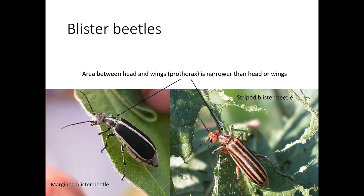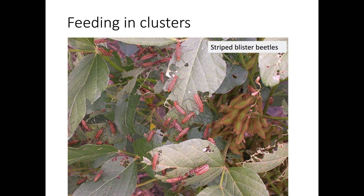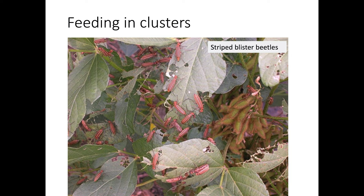You don't want to handle blister beetles if you catch some in your net, as they secrete a toxin from their legs that can burn or blister your skin. Adults are soft-bodied beetles approximately three-quarters of an inch long. The striped blister beetle has alternating dark brown and yellowish-orange stripes along the length of the body. The margined blister beetle is black with a gray border along the margins of its wing covers. The prothorax — the area between the head and the wings — is narrower than the head and wings. Adults of both species feed in clusters and skeletonize soybean leaves, making large irregular holes between the leaf veins. Feeding is typically localized to a few small areas of the field, and they will often leave as quickly as they arrived.